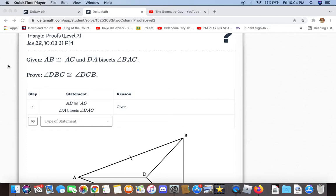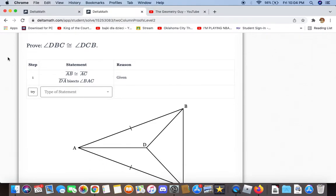When line segments AB and AC are congruent to each other, and DA bisects angle BAC, we now have to prove that angle DBC is congruent to angle DCB.